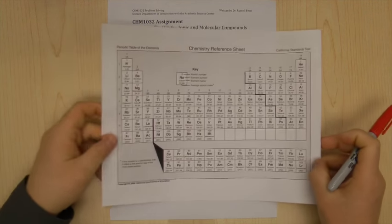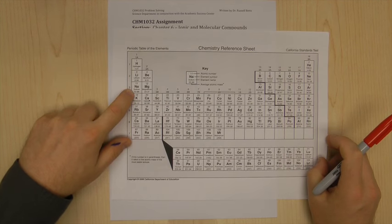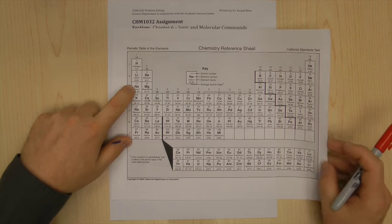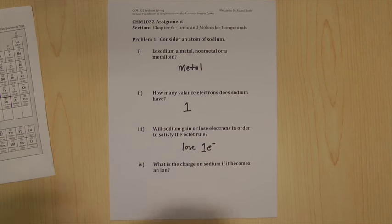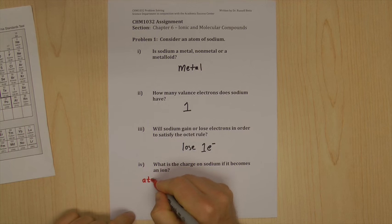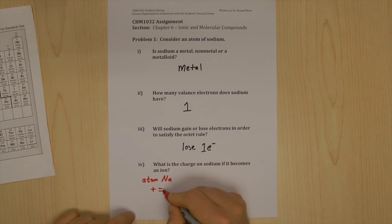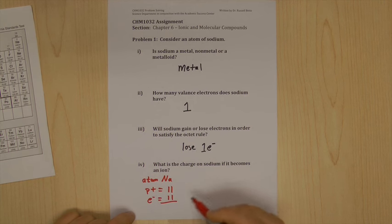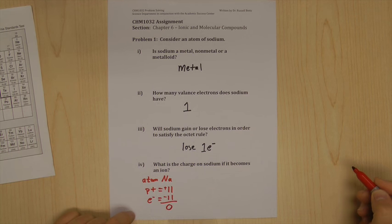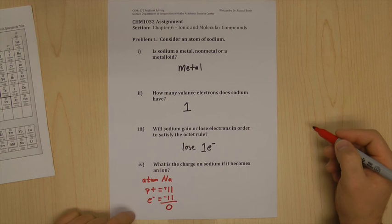On the periodic table, let's just pull it up again. Sodium has 11 protons. Its atomic number is 11. So it has 11 protons. So an atom of sodium, protons equal 11. Electrons equal 11. So the positive charges and the negative charges are equal. So the grand total of charges is zero. So an atom of sodium has no charge.